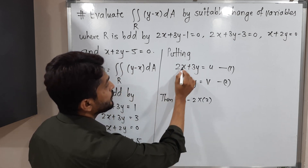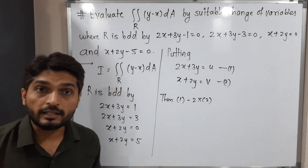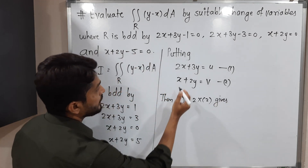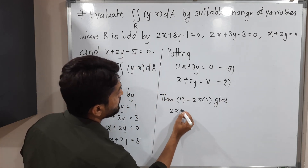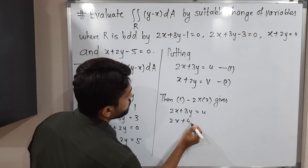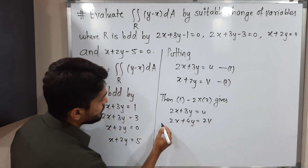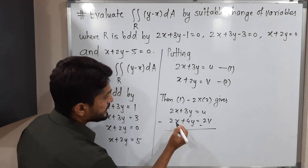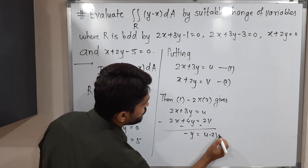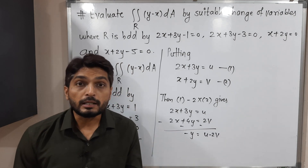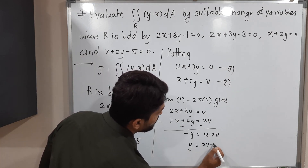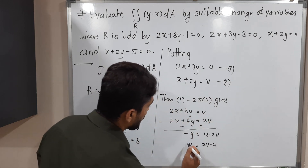Multiplying equation 2 by 2 gives 2x plus 4y equal to 2v. Subtracting from equation 1 (2x plus 3y equals u): 2x cancels, giving minus y equal to u minus 2v. Multiplying both sides by minus 1 gives y equal to 2v minus u.